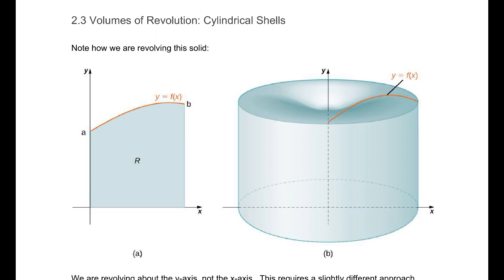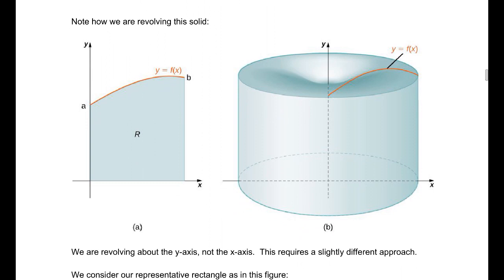We are revolving this solid — we have a region bound between a and b of the function f of x, and we are revolving it around the y-axis. The solid we're actually forming looks something like this. The big difference is that we are revolving around the y-axis, not the x-axis like previously with the disk and the washer method, so we have a slightly different approach.